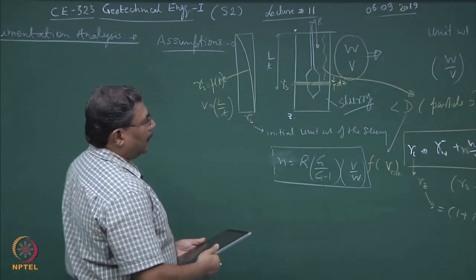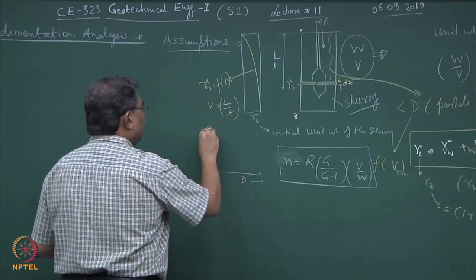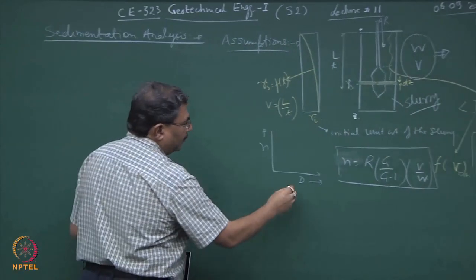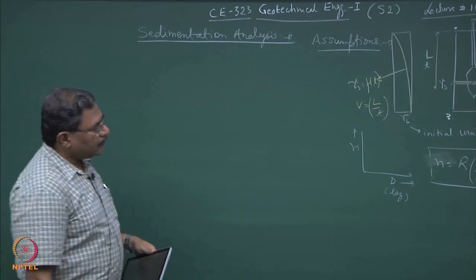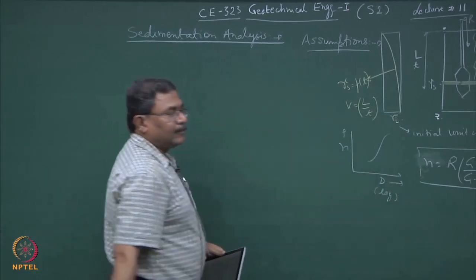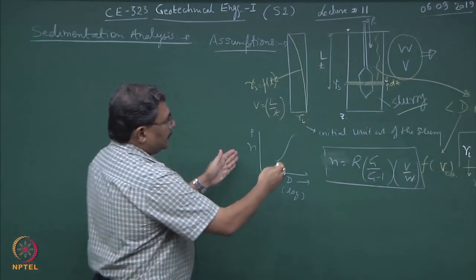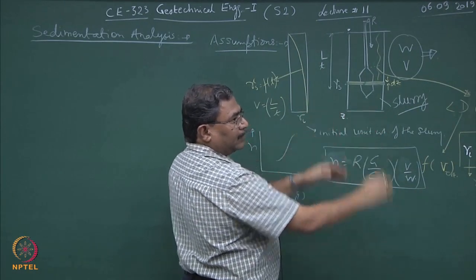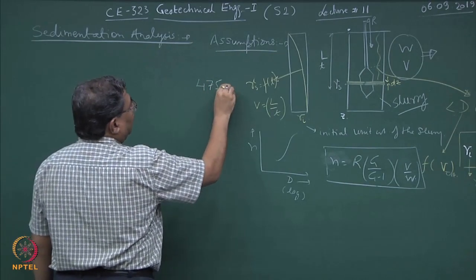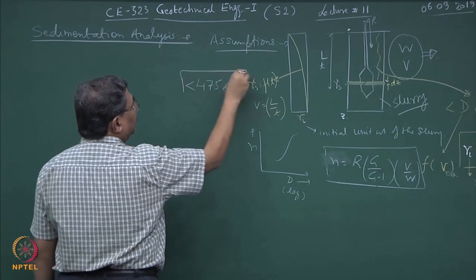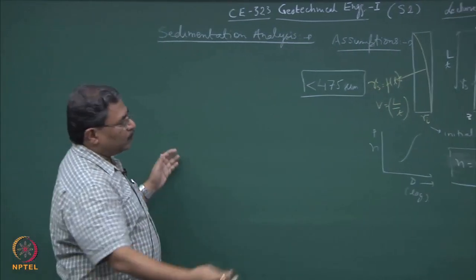You get the value of n, and this n can be plotted on a log scale — that is the x-axis. This is the graph which you get. This analysis is done on the fine fraction, where we are filtering out 475 micron particle size. The rest of the analysis was done on the coarse fraction. Now you have to join both the graphs. So if you take x amount of soil, after filtering from 475 micron, you will be getting x coarse and x fine.